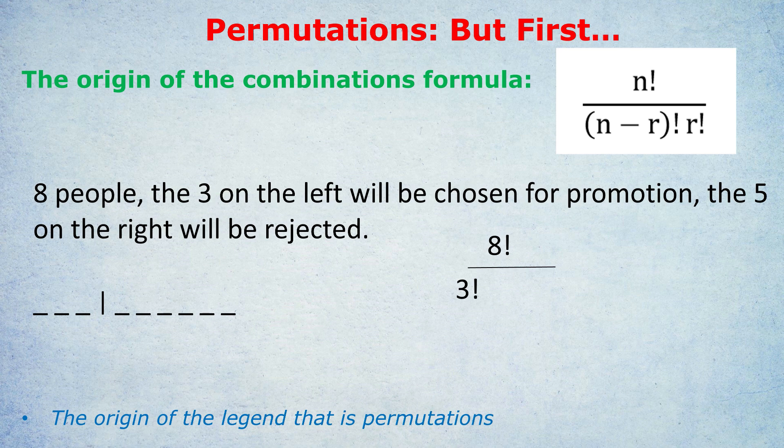So this eight factorial, even divided by three factorial, still contains so many duplicates of the same situation, just with the rejectees in a different order. So we have to account for that by dividing by the rejectees factorial. And how many people won't be selected and will be rejected? It will always be the total minus the number of people we're selecting, eight minus three in this case. The bottom two numbers in the formula always add up to the top number in the combinations formula.